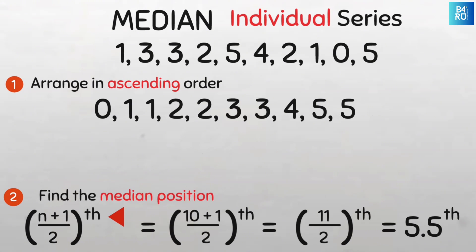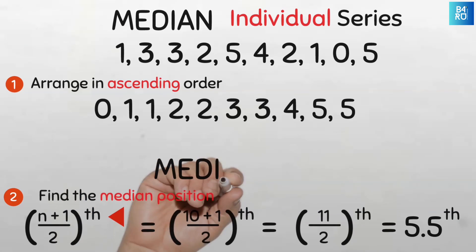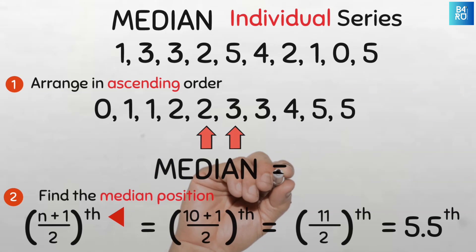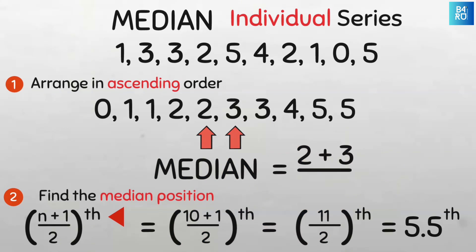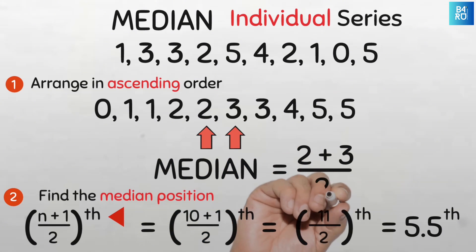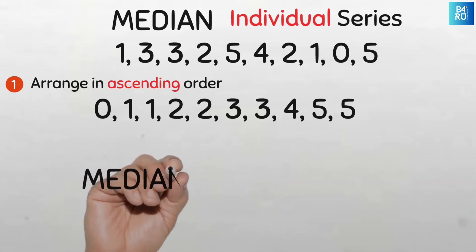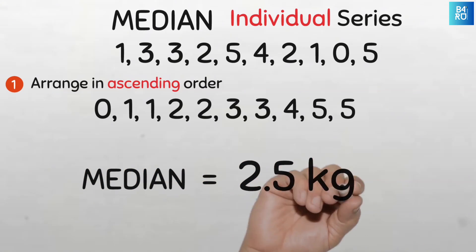There is no 5.5 position, so we'll have to find the average of the values at the fifth and sixth positions. Counting: 1, 2, 3, 4, 5 — our fifth value is 2 and our sixth value is 3. The average of 2 and 3 is (2+3)/2 = 2.5. So our median is 2.5.